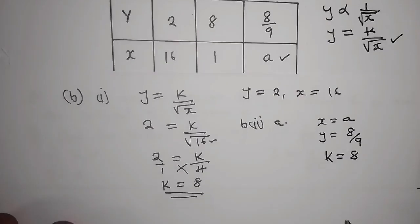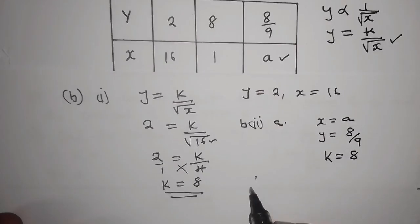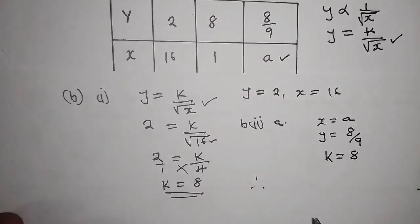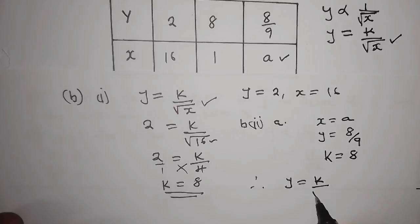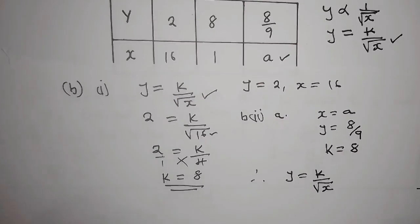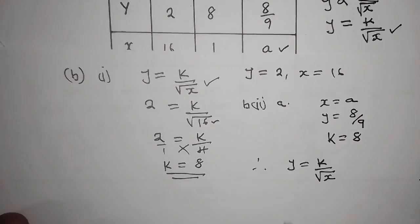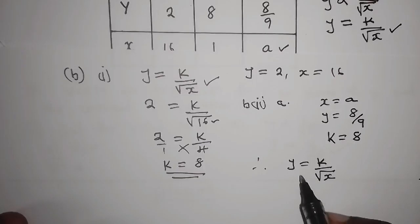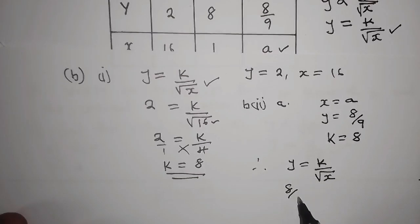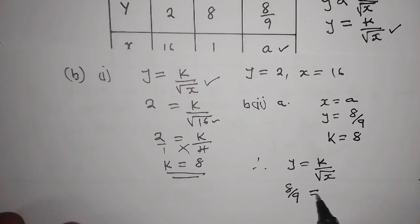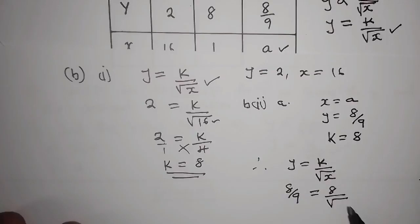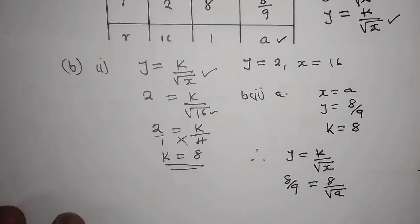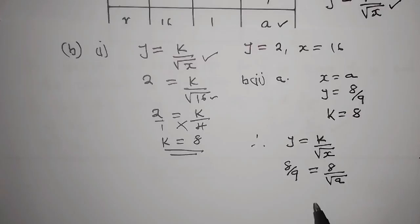So from there now, applying the same formula, we can just replace: y is 8 over 9, and our k is 8 over the square root of a. So from there now, you are going to cross multiply.